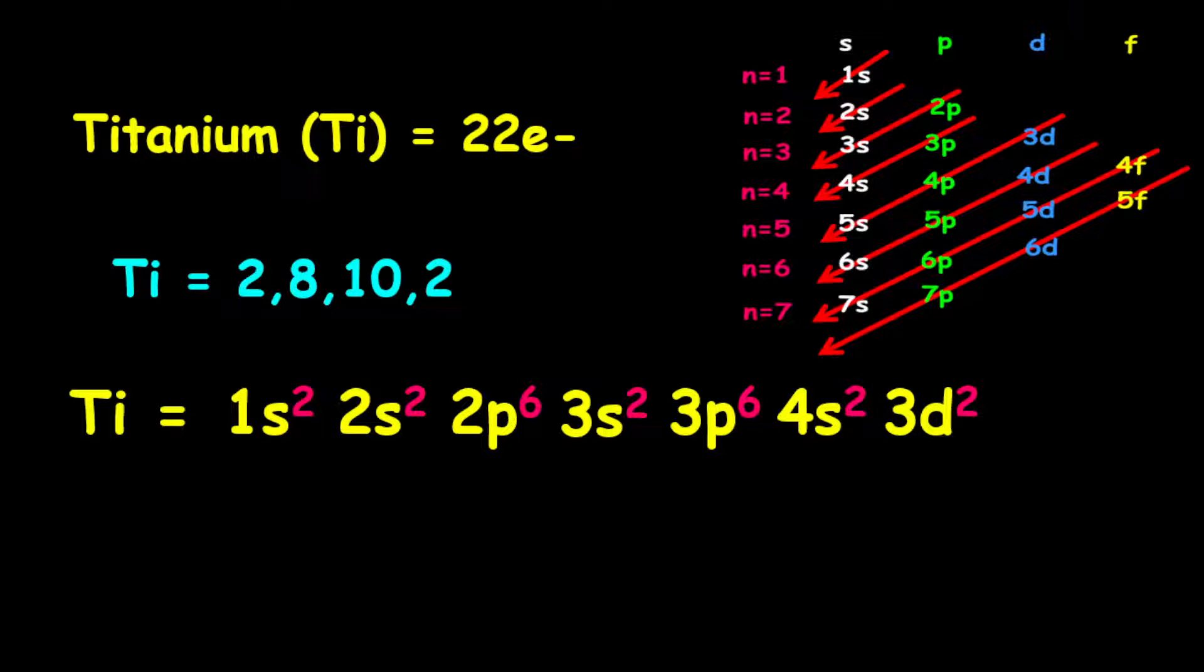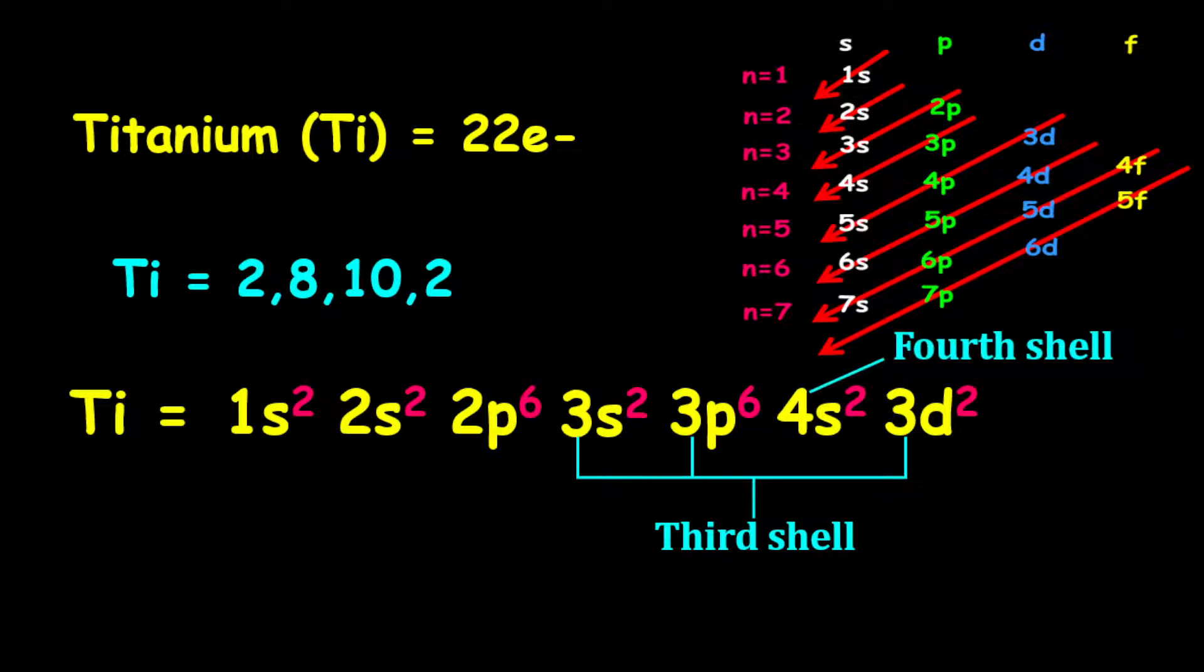Now for the third shell, we have a total of 10 electrons. So therefore, the 3s2, the 3p6, and the 3d2 all account for that 10 electrons on the third shell. We only have 2 electrons on the fourth shell.